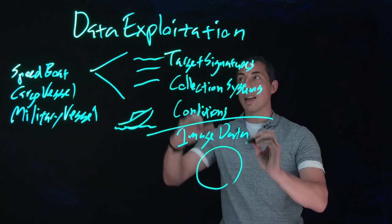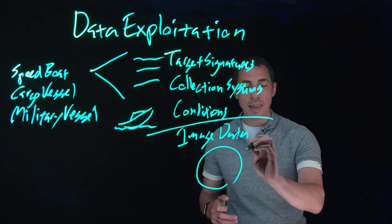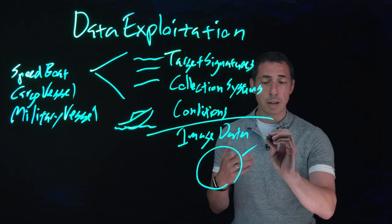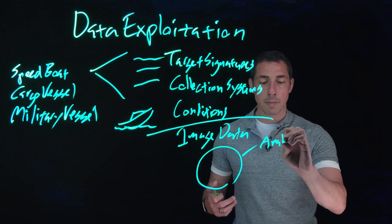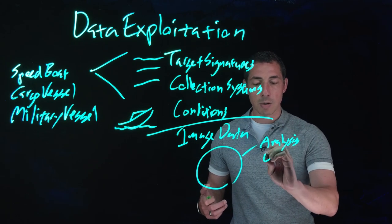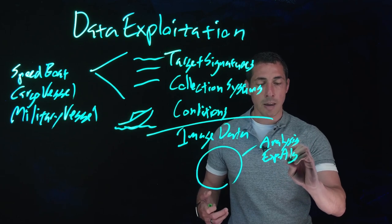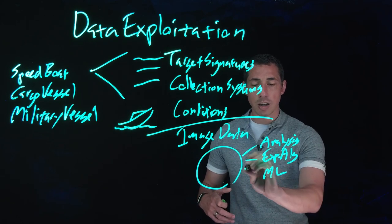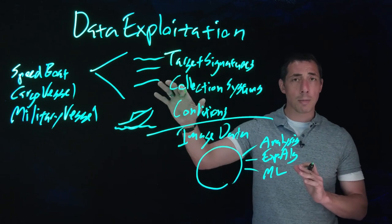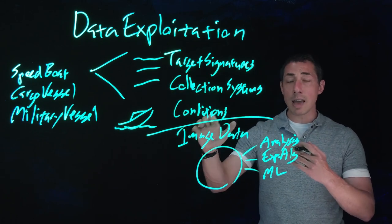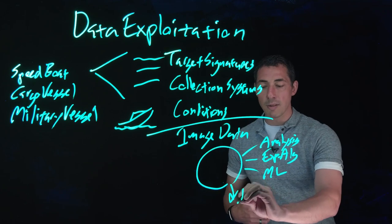And this image data is going to be then exploited in here. But that can be done a number of different ways. It can be done with a human analyst. It can be done with some type of exploitation algorithm. Or it can be some type of machine learning loop where you're taking these known parameters and you're combining them with the image data and you're producing some type of intelligence.